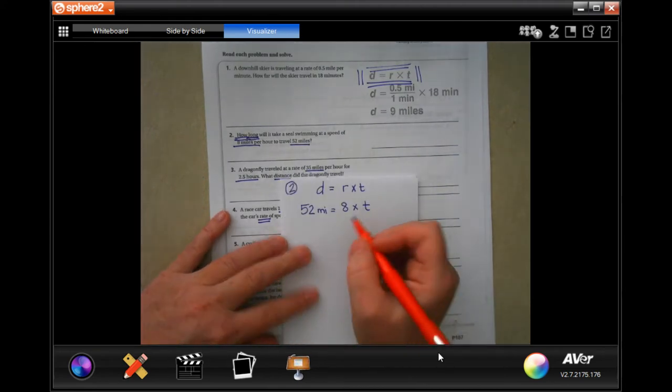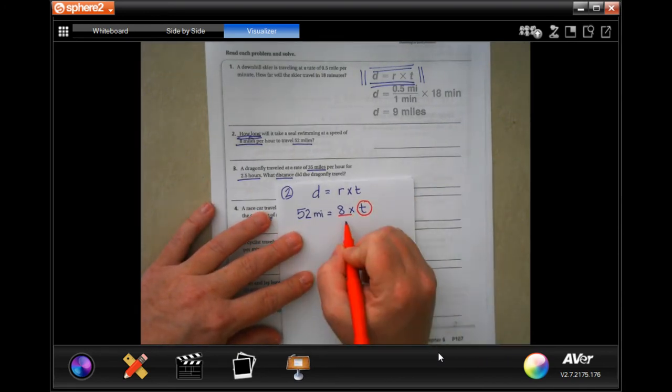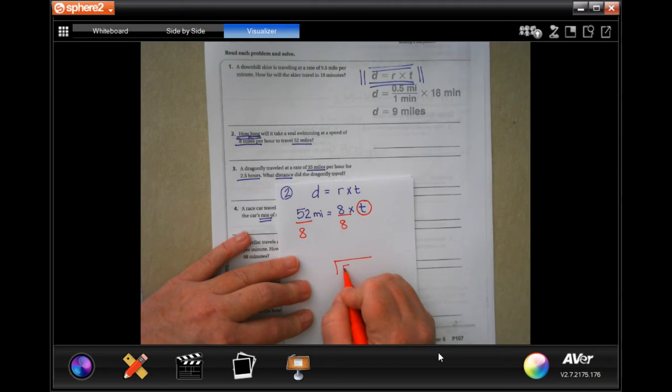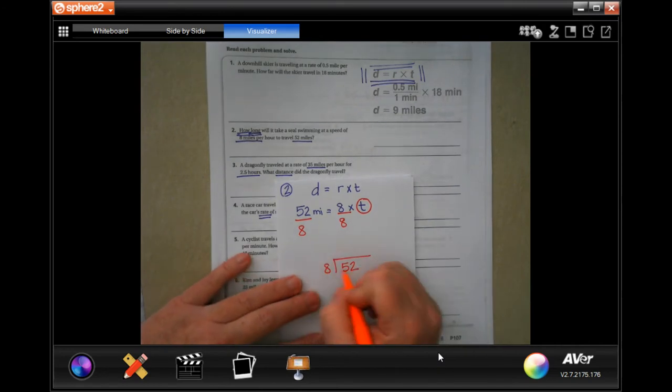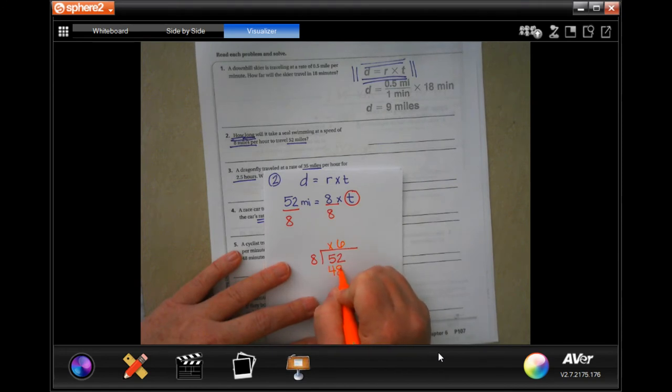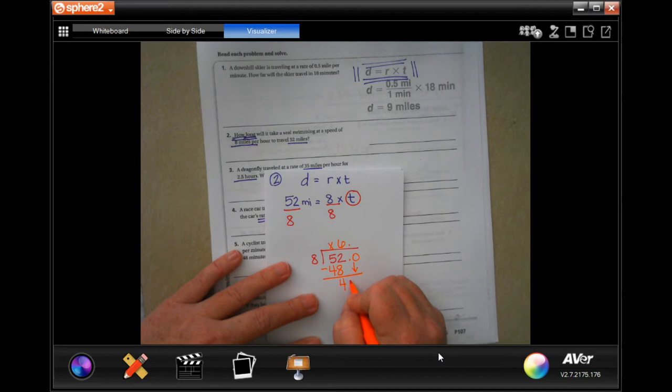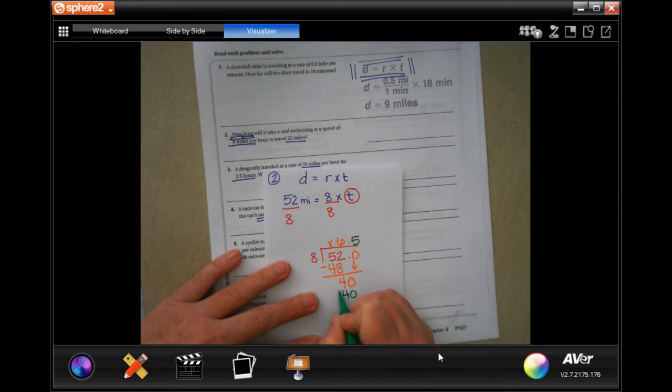Now, in order to isolate this one and get it alone, I have to do the opposite of this, which means that I need to divide by 8 on both sides. So now I just need to do 52 and divide it by 8. So, 8's not going to go into 5. I know that 6 times 8 is 48, so there we go. Subtract and get 4. Decimal, decimal, 0, bring it down. That makes 40. 40, 8 goes into 40, 5 times. 8 times 5 is 40. Subtract, get 0.